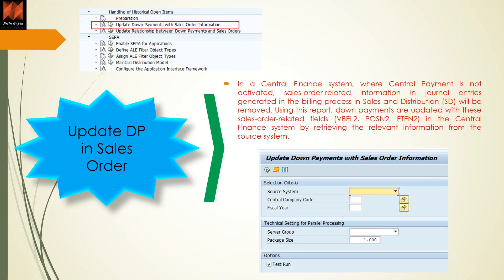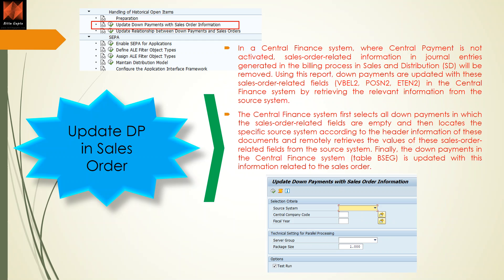The report brings out the sales order information on the down payment documents — this applies to down payments created before central payments activation. The system first selects all down payments where sales order fields are empty, then locates the specific source system according to header information, remotely retrieves the sales order-related field values, and finally updates the CFIN table BSEC as well as the CFIN AC docker table with the sales order information.